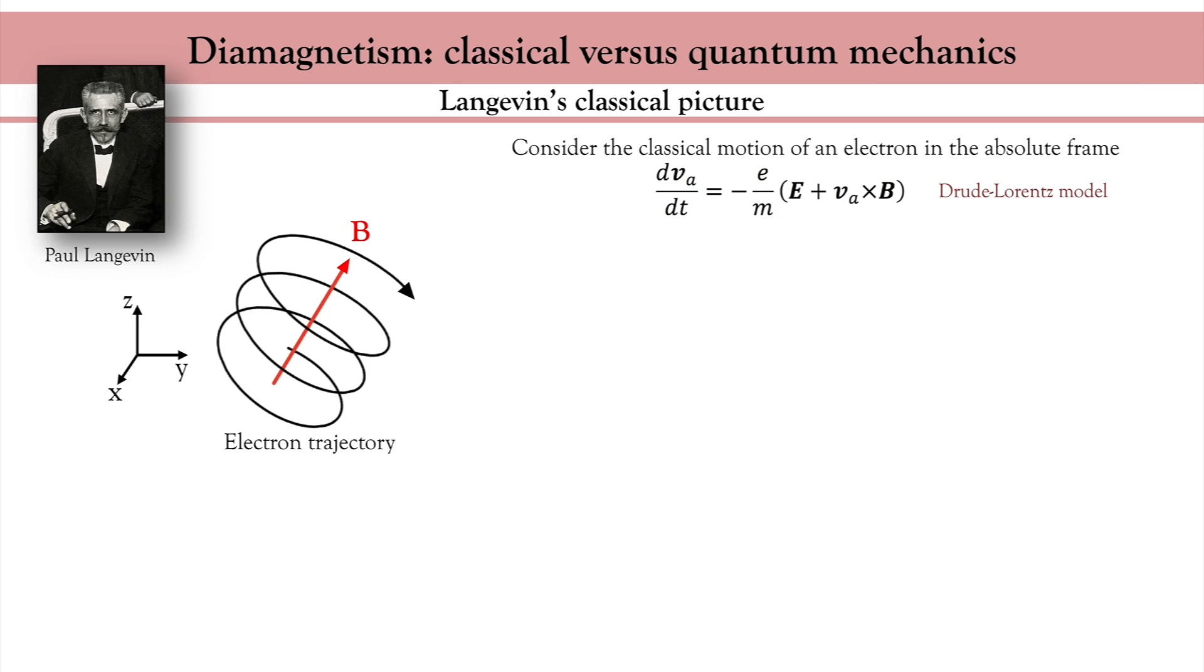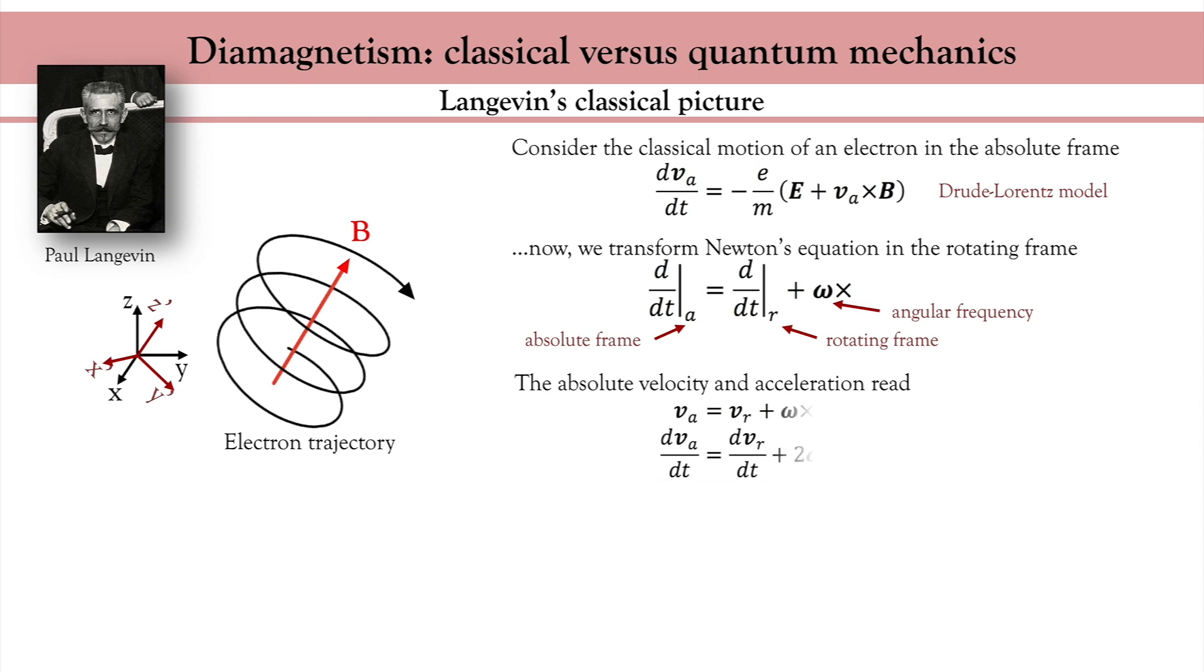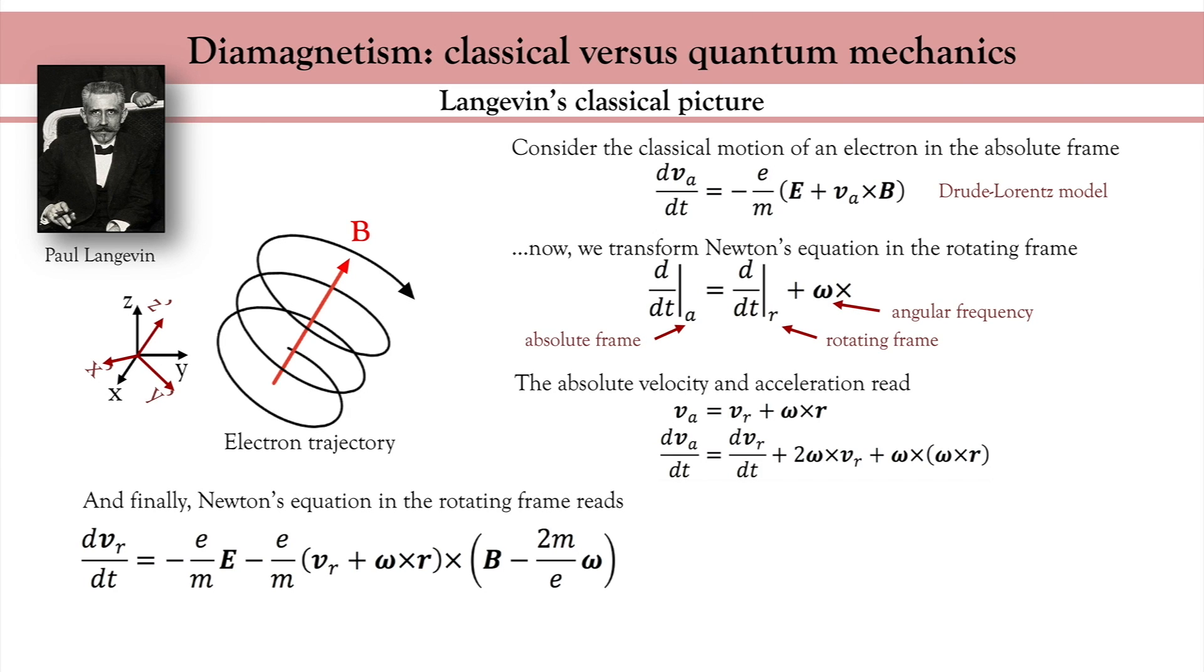To quantify this moment, we need to know the precession frequency, also called Larmor frequency. We can rewrite the Drude-Lorentz model in the rotating frame by performing a simple change of frame. Now, the angular frequency of the electron appears explicitly. In this rotating frame, the velocity and acceleration look like this. And finally, I obtain Newton's equation of motion in the rotating frame. In this frame, the electron does not exhibit any Lorentz force by definition. So, the last term must cancel. This gives me the expression of the Larmor frequency as a function of the magnetic field.